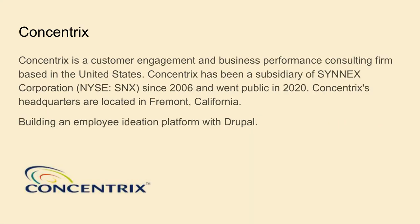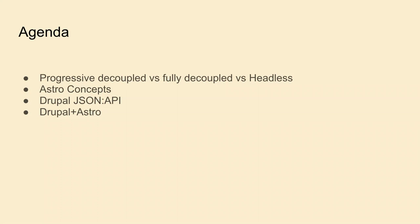I work at Concentrix, a customer engagement and business performance consulting firm in the US. We're building an application for an employee via platform using Drupal. Today we're going to see the difference between progressive decoupled, fully decoupled, and headless, dive into the Astro concept, get an introduction to the Drupal JSON API, and then see how we can build an application using Drupal and Astro.